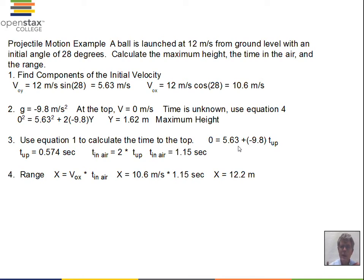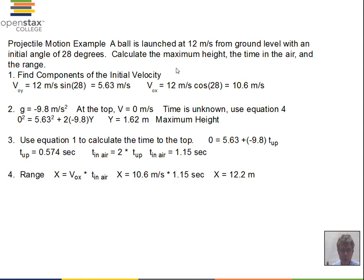For the time to the top, use equation 1: 0 equals 5.63 minus 9.8 times t, giving 0.574 seconds. Since we're landing at the same height as launch, the total time in the air is double that: 1.15 seconds. The range is then calculated using distance equals rate times time in the x direction: 10.6 meters per second times 1.15 seconds gives 12.2 meters. You can experiment by changing the angle toward 45 degrees to get a bigger range, or reducing the speed to see the range get smaller. That's where we'll stop this video — keep reading and keep asking questions.